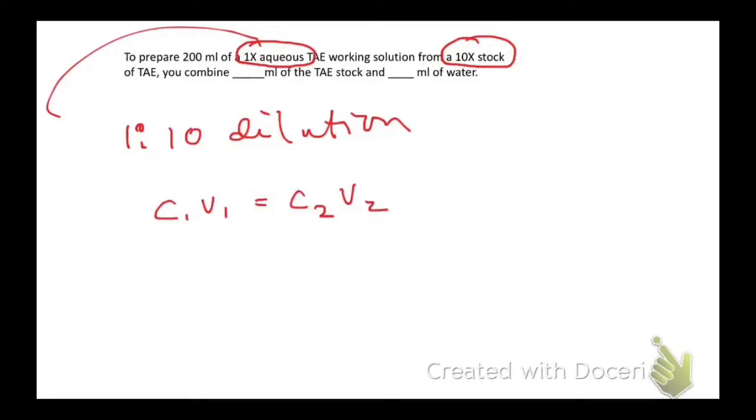Let's look at an example. In this case, we're looking at a 10x stock and we want to make a 1x stock. So we know we're going to do a 1 to 10 dilution. We can use C1V1 equals C2V2 and plug in the numbers. 10x times V1 equals 1x times 200 mils, so V1 equals 20 mils.